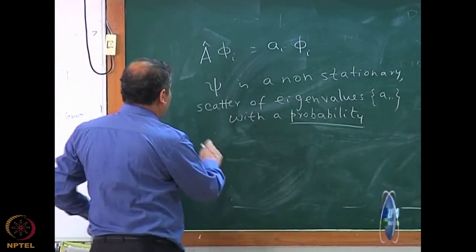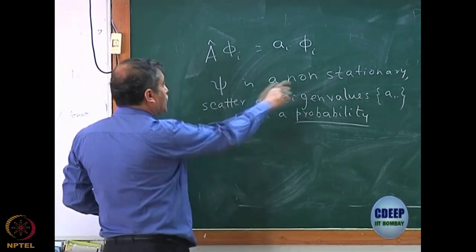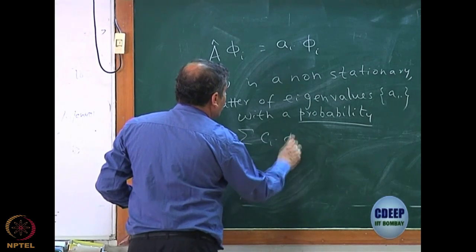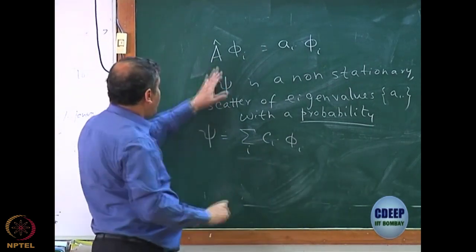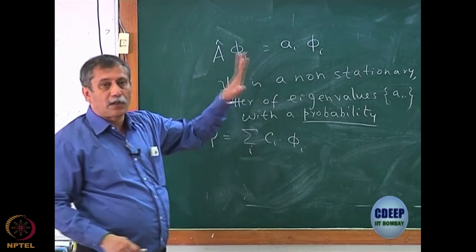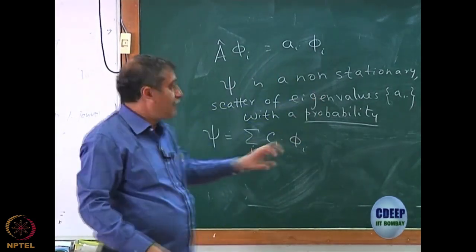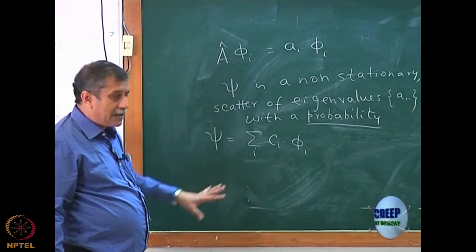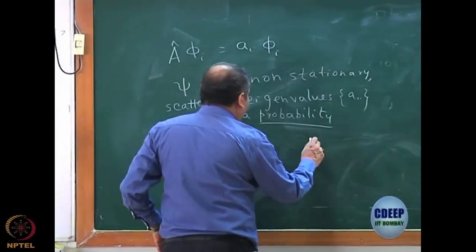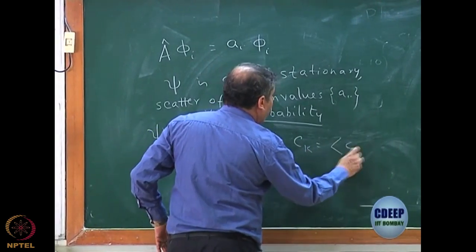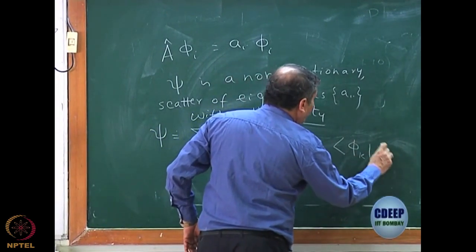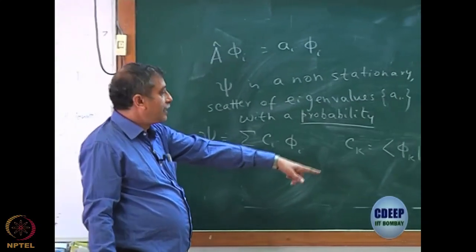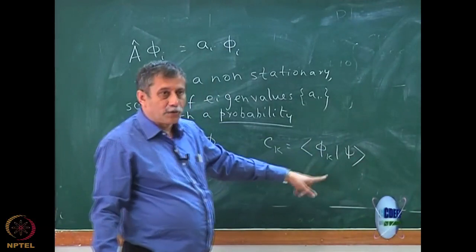The definition comes from the fact that ψ, although it is non-stationary, can always be expanded in terms of the eigenfunctions of A, because the eigenfunctions of the Hermitian operator form a complete orthonormal set. I can expand ψ in terms of this complete orthonormal set, where a particular C_k can be written as ⟨φ_k|ψ⟩ — the inner product of φ_k and ψ — which is ∫φ_k* ψ dτ.